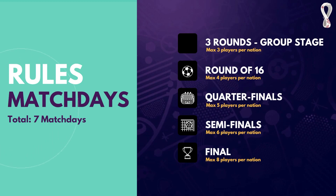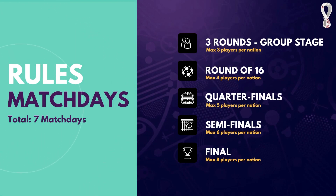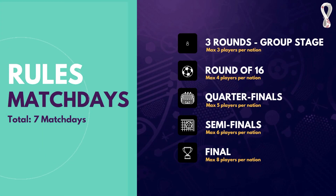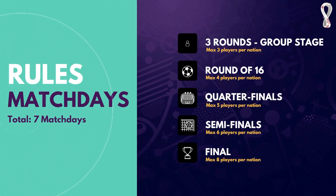Moving on to the rules for match days — there will be a total of seven match days. There will be three match days in the group stages where you can select a maximum of three players per nation. The round of 16 allows four players from one nation, quarterfinals allows five players per nation, semifinals allows six players, and in the final you can select a maximum of eight players per nation.